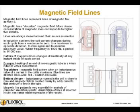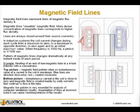Magnetic field lines represent lines of magnetic flux density. Magnetic lines visualize the magnetic field — a more dense concentration of magnetic lines corresponds to higher flux density. Lines are always closed around their source or currents. In induction systems, the coil current changes during each cycle.